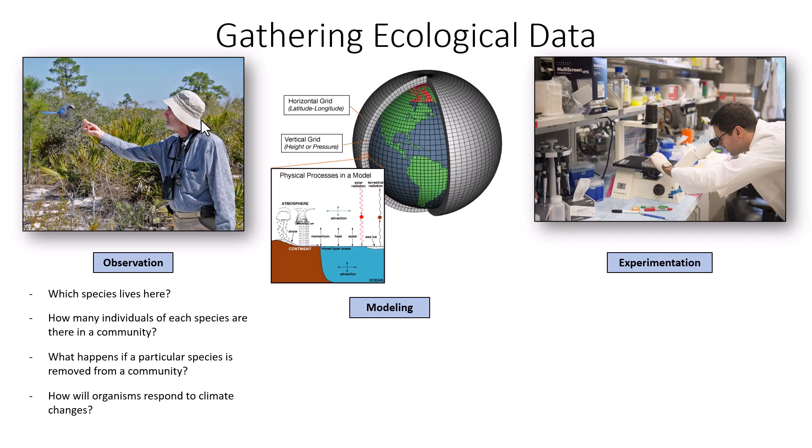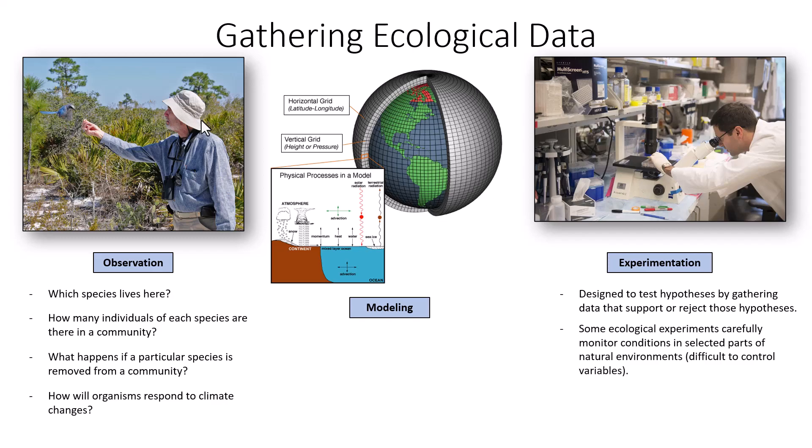These questions would lead to experimentation in a lab in order to collect data to answer them. Some experiments are designed to test hypotheses by gathering data that support or reject those hypotheses. Some ecological experiments carefully monitor conditions in selected parts of natural environments, which is incredibly difficult when trying to control variables.